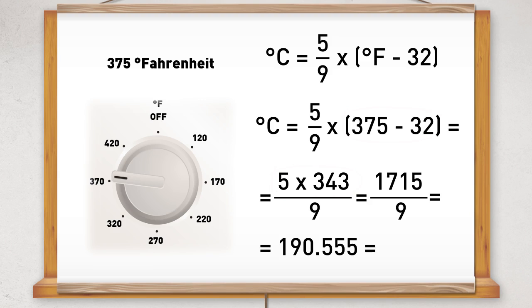If it's only roughly, in this case it's for a recipe, so it's fine to round, we would round this to the nearest 5 degrees, which is 190 Celsius.